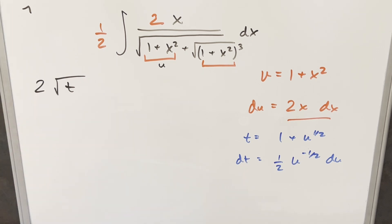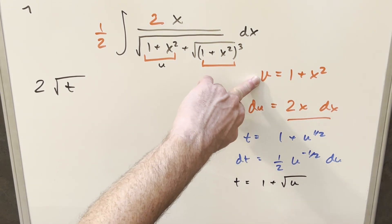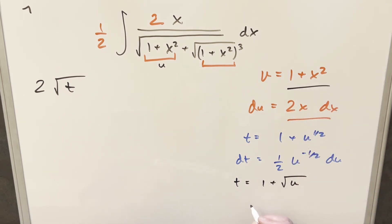Now before I back substitute, we actually have to back substitute twice. Let me clean it up and get it all the way back to x. So for our t value, we have t is going to be 1 plus square root of u. But then let's plug in our u value, which is 1 plus x squared. So for t, we can say this is the same thing as 1 plus square root of 1 plus x squared. So we'll take this and plug it back in.